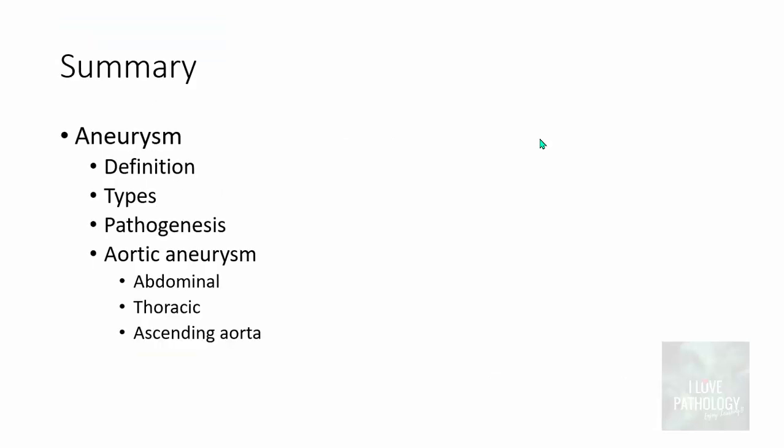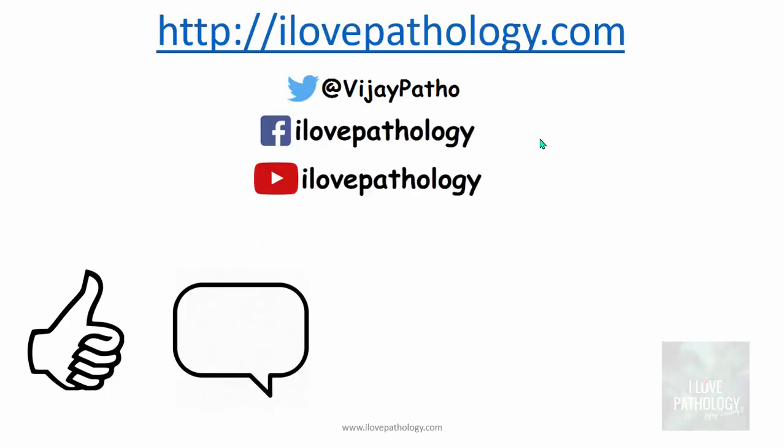That completes the topic on aneurysm. We studied the definition of aneurysm, the various types, the pathogenesis, and about abdominal, thoracic, and ascending aorta aneurysms. Thank you.